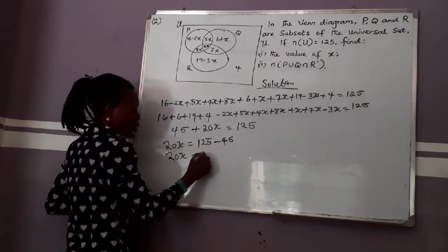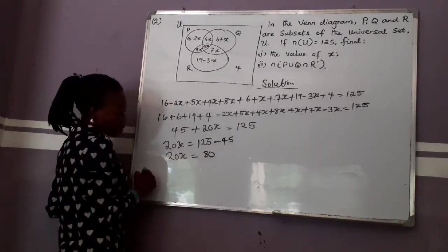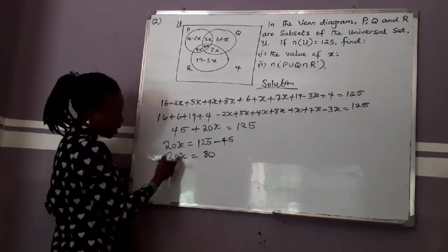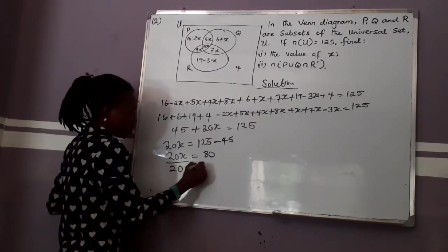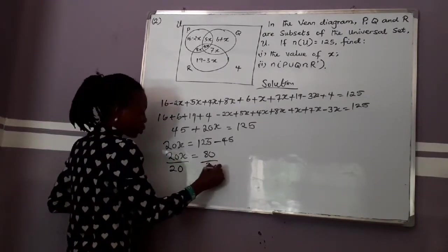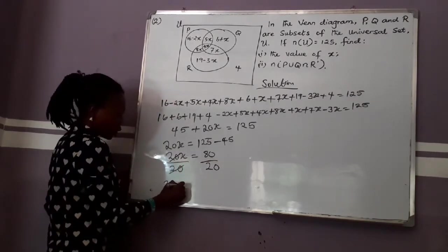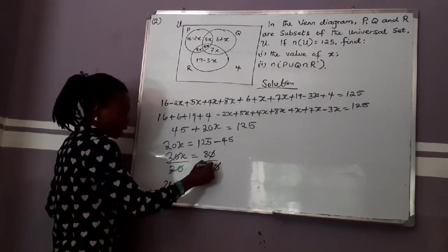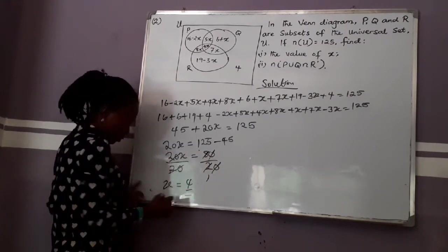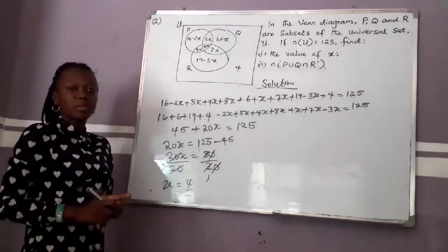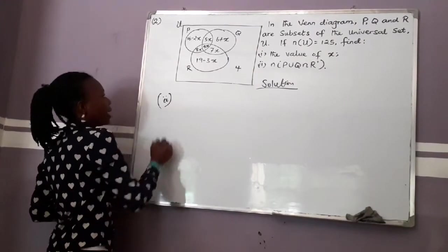20X equals 80. To make X the subject, divide both sides by the coefficient of X, which is 20. 20 cancels 20. X becomes 80 over 20, which is 4. So X equals 4. Part (ii): Find N of P union Q intersection R prime.